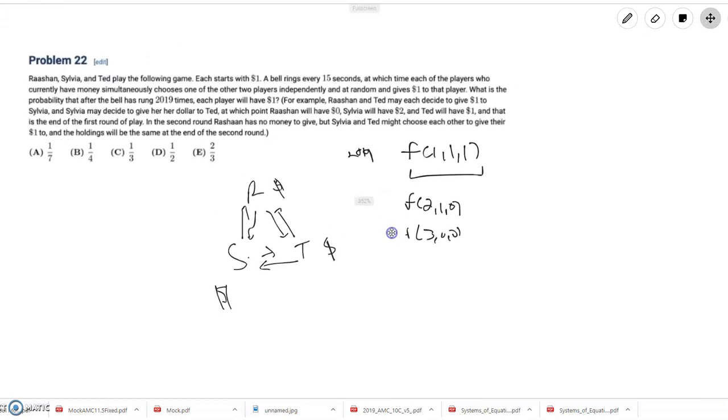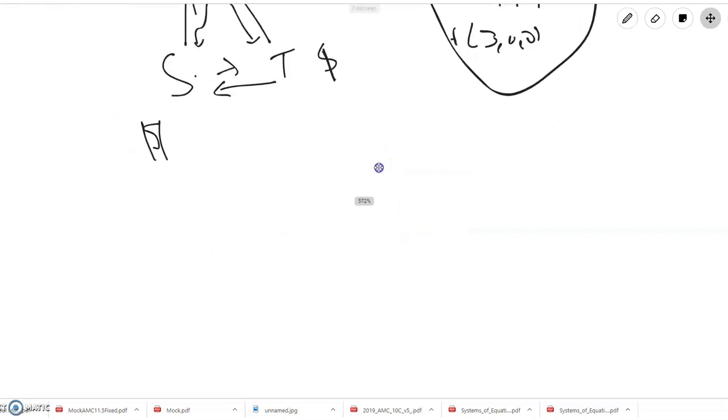And so basically, since we have 2019 turns, we want to basically try to construct some sort of state diagram, or some sort of state equation, that we can relate these three states to each other. So if each player has one dollar...